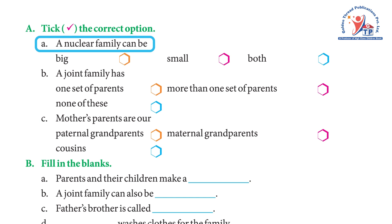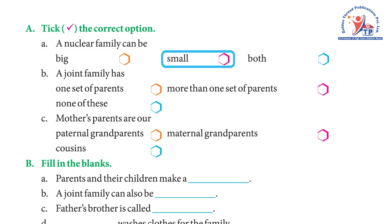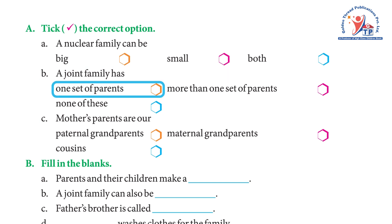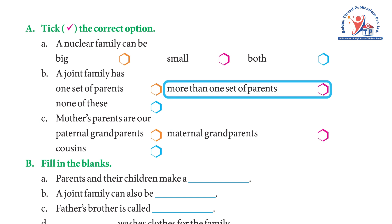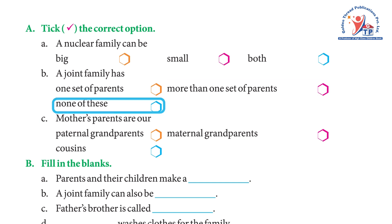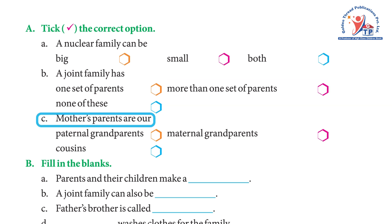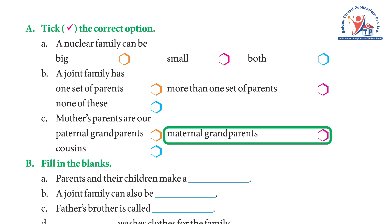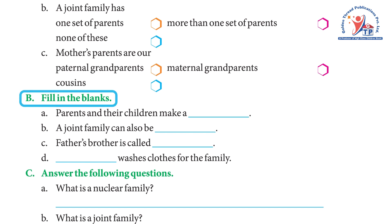Check the correct option. A — a nuclear family can be: big, small, or both? Answer: both. B — a joint family has: one set of parents, more than one set of parents, or none of these? Answer: more than one set of parents. C — mother's parents are: paternal grandparents, maternal grandparents, or cousins' parents? Answer: maternal grandparents.